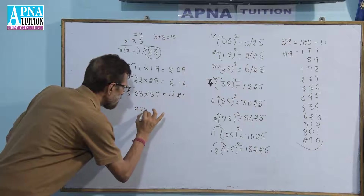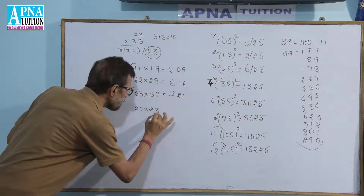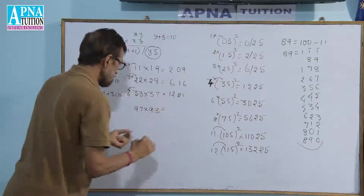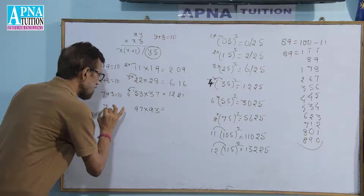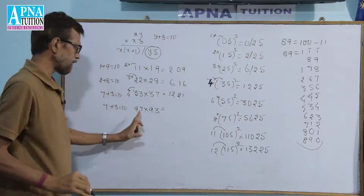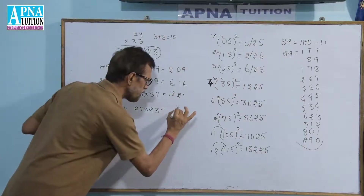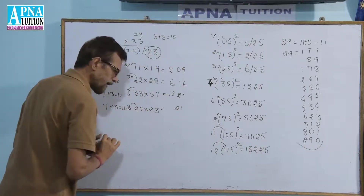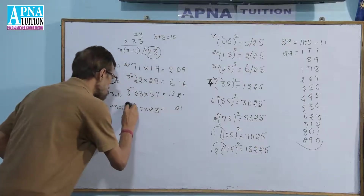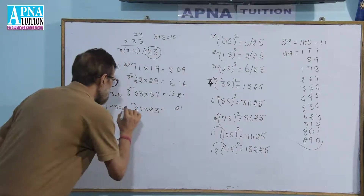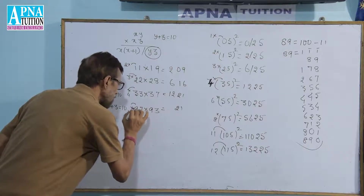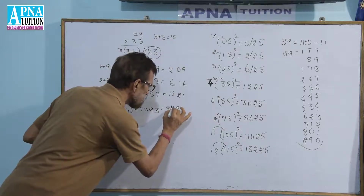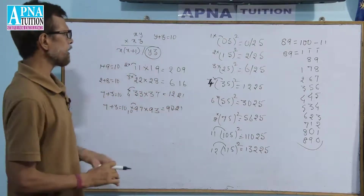For 97 × 93: 7 + 3 = 10, condition holds. 7 × 3 = 21, write 21. The tens digit 9 is increased by 1 to give 10, and 10 × 9 = 90. So 97 × 93 = 9021.